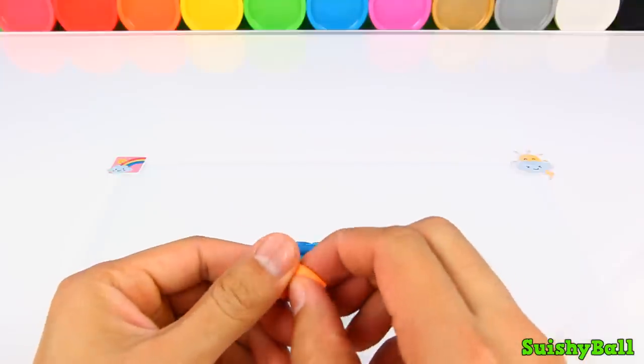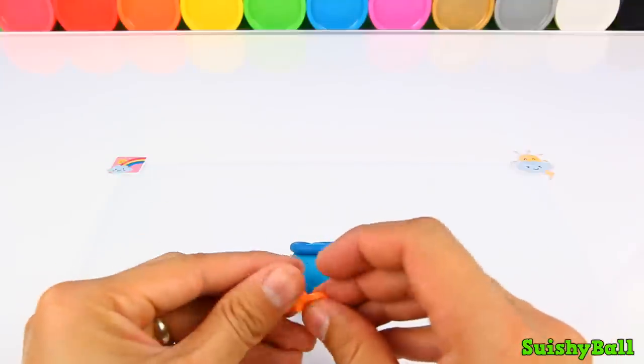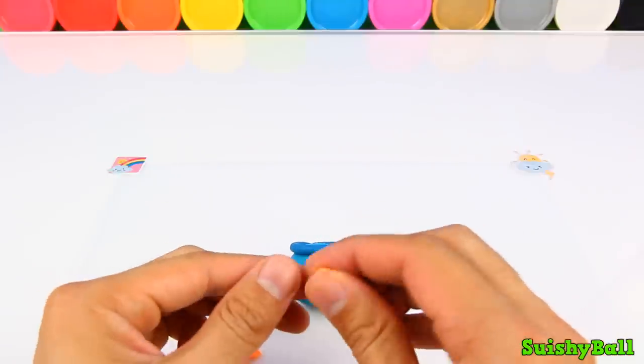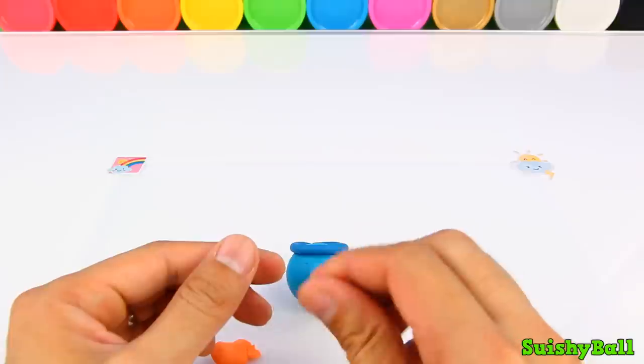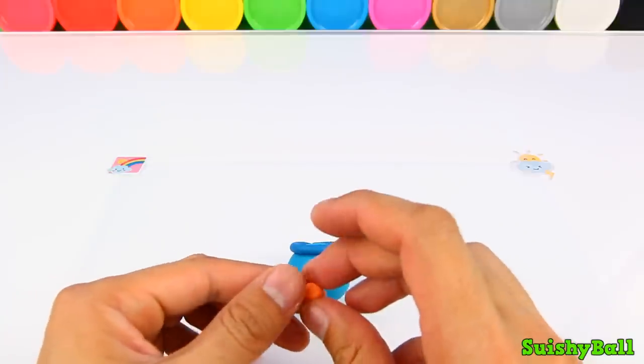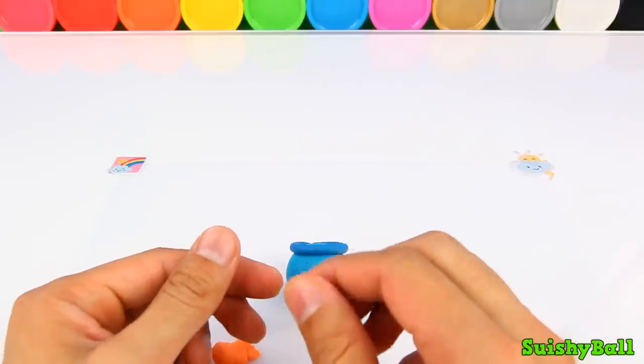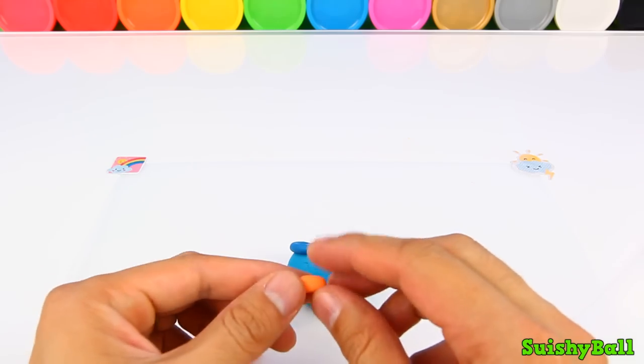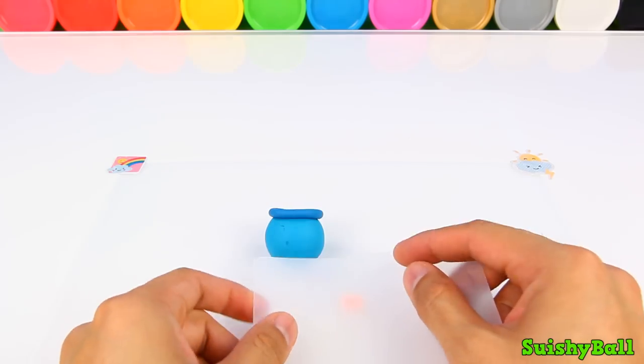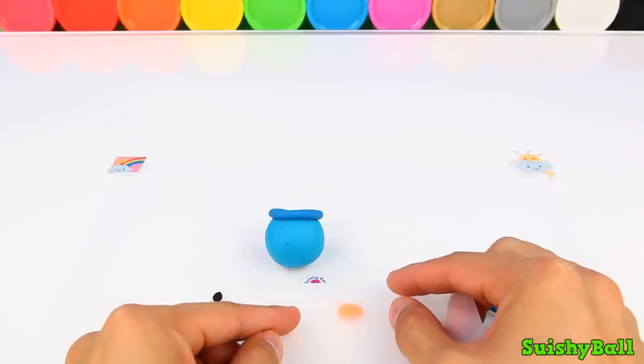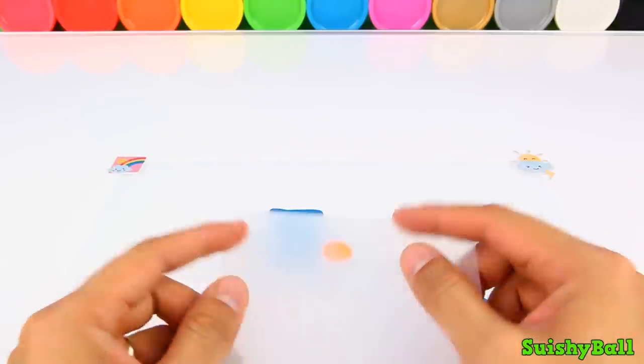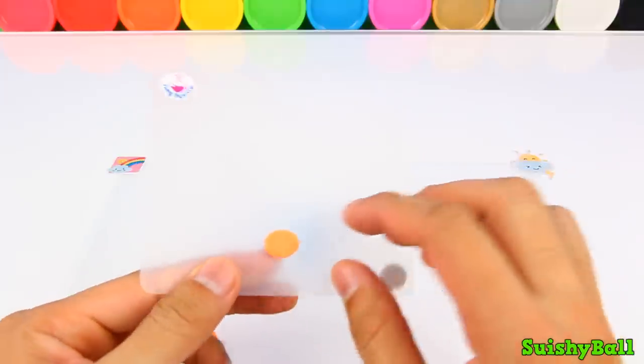Next, I'm going to make a little fish by taking some of this orange play-doh and then rolling it a little bit and then I'm going to flatten it a little just like that.